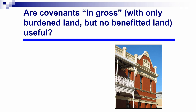Covenants in gross — those involving only burdened land with no benefited land — can still be extremely useful. For example, think about a historic preservation covenant. A citizens' group interested in preserving a town's historic buildings goes to the owner of one and asks: 'Would you give us a covenant to maintain the facade and attributes of this building so its historic nature will always be obvious?' The group doesn't happen to own any real estate, so we have burdened land but no particular benefited land. The Restatement says that's perfectly okay, though American courts have historically split on the issue.